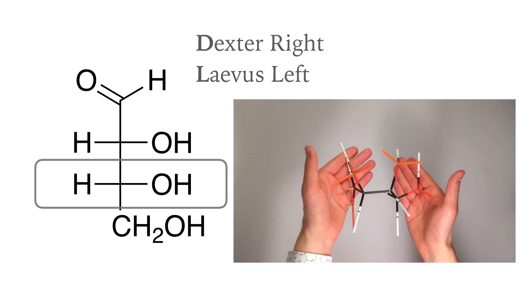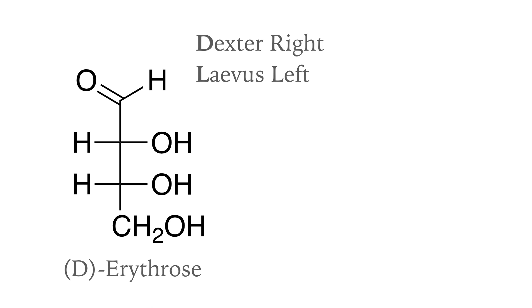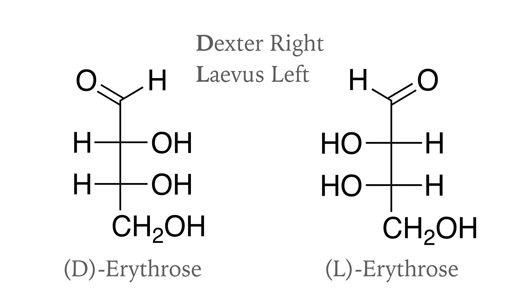Both OH groups show to the right. To assign L and D, you only have to look at the lowest stereocenter. The substituents receive a certain priority according to their atomic number. In this case, the substituent with the highest priority shows to the right, therefore we call this molecule D-erythrose. The exact mirror image is L-erythrose because the lowest OH group shows to the left in that case.